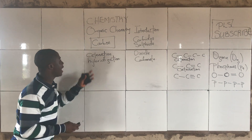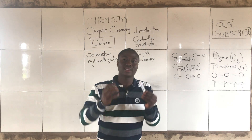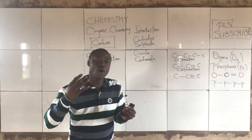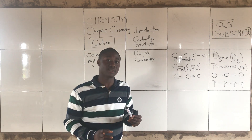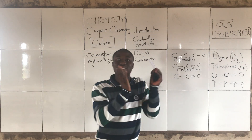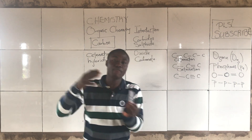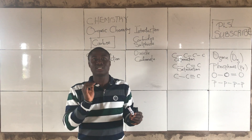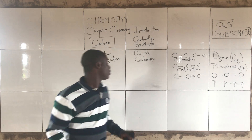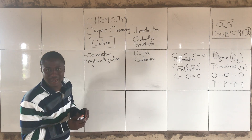Now, talking about hybridization — what is hybridization? Hybridization is simply the mixing of pure orbitals to form new sets of equivalent orbitals. You are mixing orbitals of different energy levels to form new sets of equivalent orbitals with the same energy level.